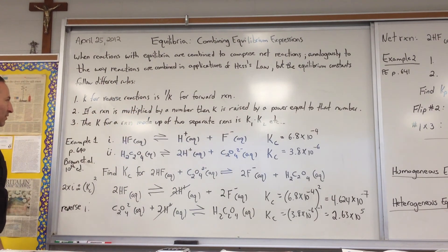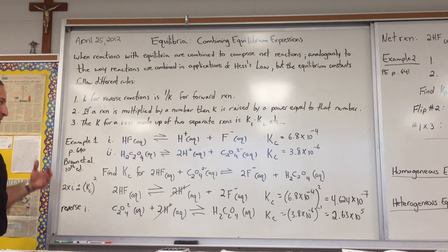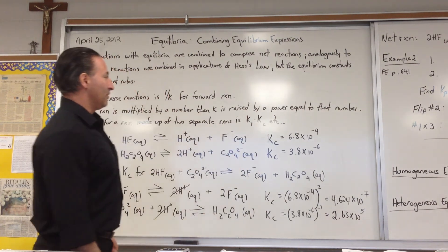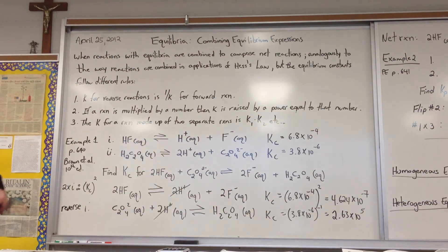The second rule is if a reaction is multiplied by a number, then the value of K is raised by a power equal to that number. So if you multiply a reaction by 2, then the value of K will be squared. If you multiply a reaction by 3, the value of K will be raised to the power of 3 and so on.